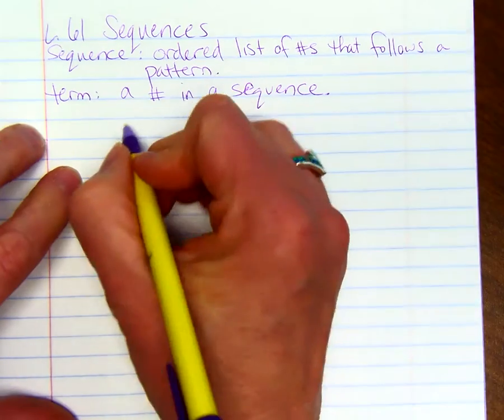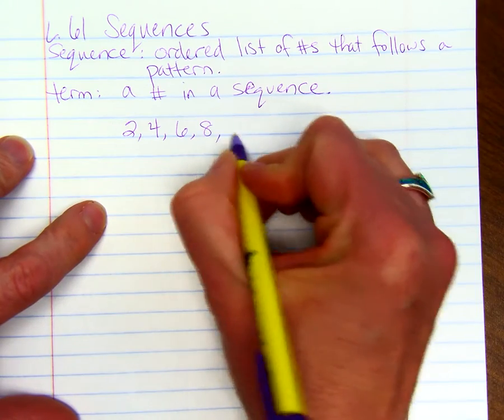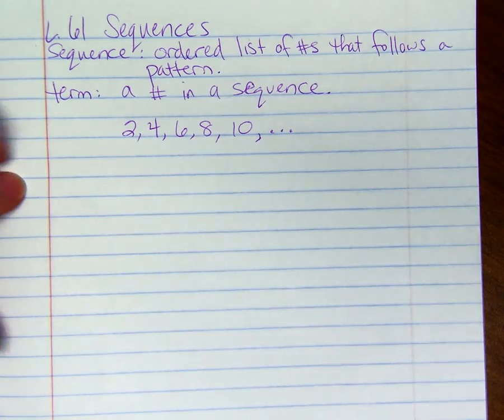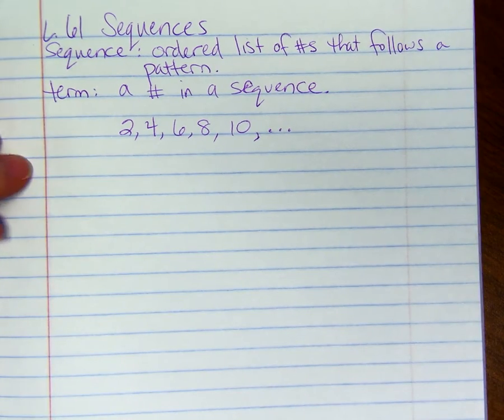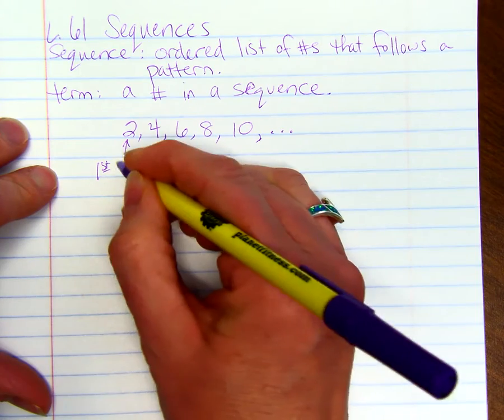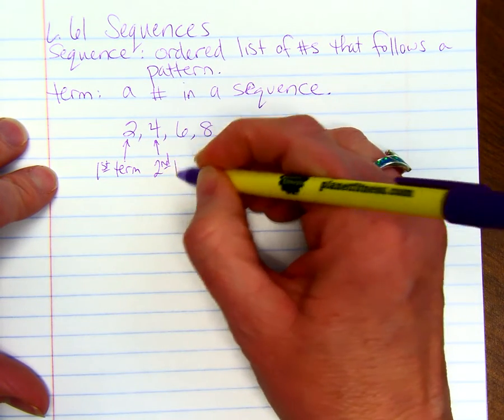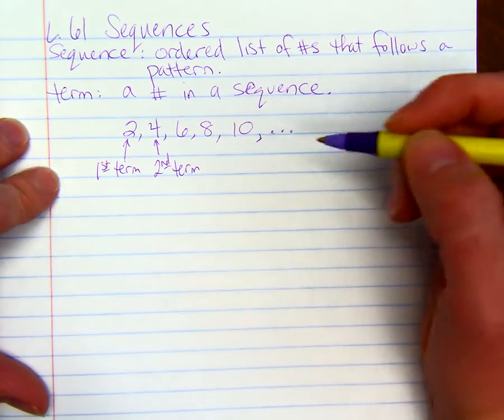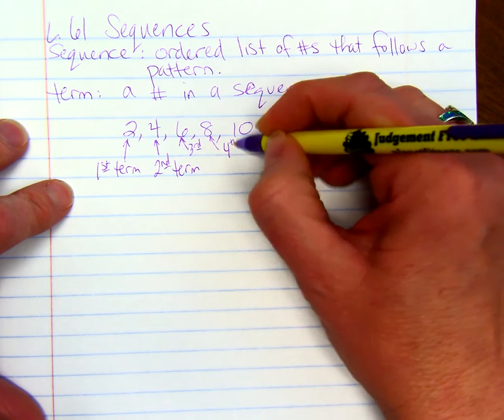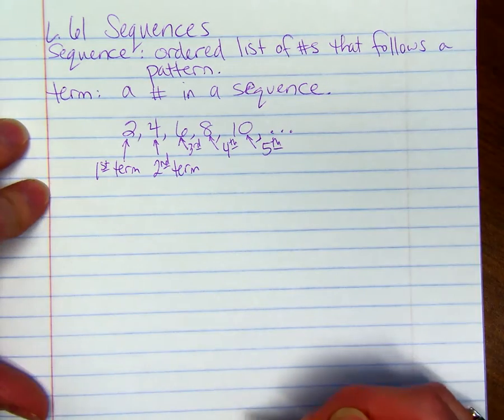Here's an example of a sequence: 2, 4, 6, 8, 10, and if I draw some ellipses that shows it's going to continue on following the same pattern. The 2 is the first term, the 4 is the second term, 6 is the third term, 8 is the fourth term, 10 is the fifth term, and it will continue on.